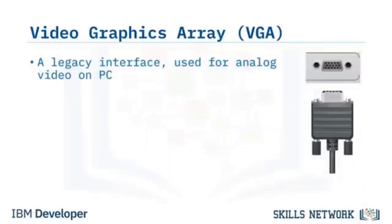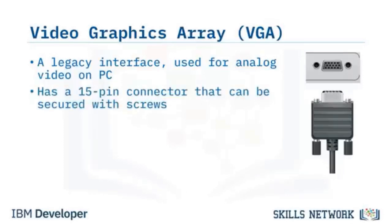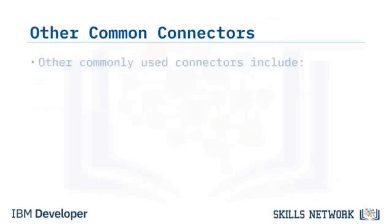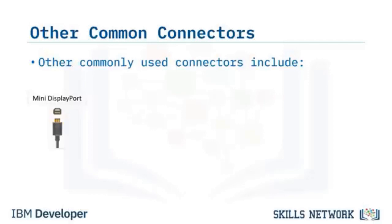VGA, one of the earliest interfaces, was developed for analog video transmission. Considering most modern graphic devices handle digital content, VGA is now considered legacy, though some PCs still support it. The VGA connector has a distinctive 15-pin array in three rows and can be secured to the port using screws. Apple provides a free license for Mini DisplayPort, which can support up to 4K resolutions, allowing connection to HDTVs from the 2010 version.